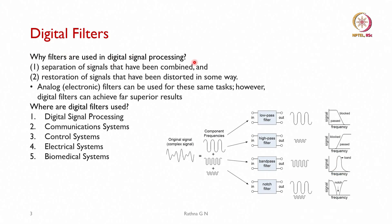Why do we need digital filters? One application is separation of signals in signal processing. An original signal may have multiple frequency components. Using different filter types — low pass, high pass, band pass, and notch filter — we can separate or remove specific frequency components. If only one frequency needs to be removed, we call it a notch filter.